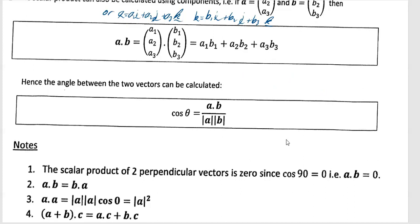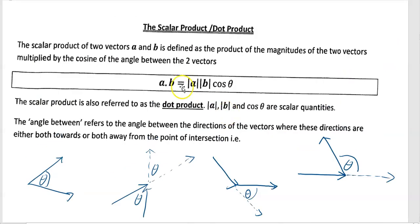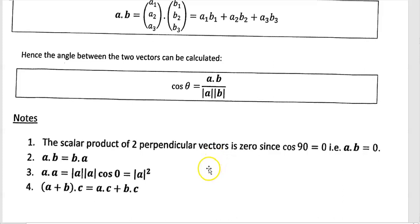Here are a few important properties of the scalar product. First: the scalar product of two perpendicular vectors is zero. Perpendicular means they're at right angles to each other, and it's zero because cos of 90 degrees is zero. So A·B equals |A||B|cos(90) equals zero. So if you're asked to prove two vectors are perpendicular, just compute their dot product — if you get zero, they're perpendicular.